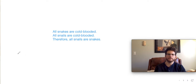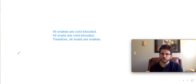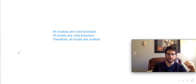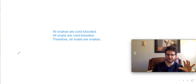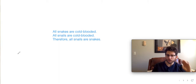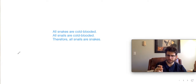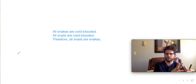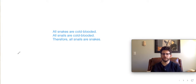This next argument is also set up deductively, but you're going to see how it's different from the last one. We've got two general statements — 'All snakes are cold-blooded' and 'All snails are cold-blooded' — and from those we're trying to arrive at something specific about snails. How would we draw them out graphically?